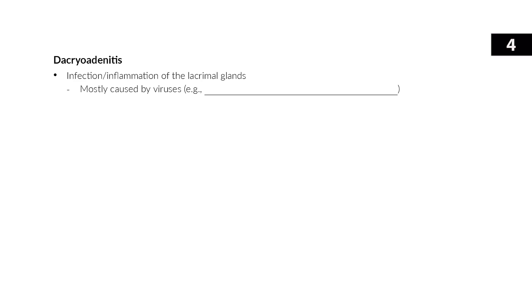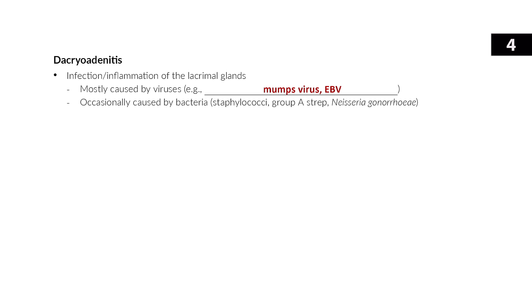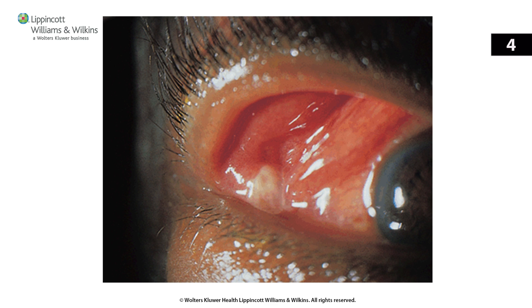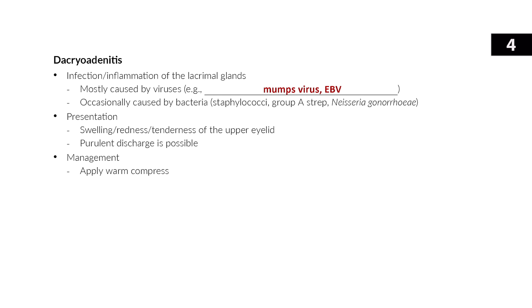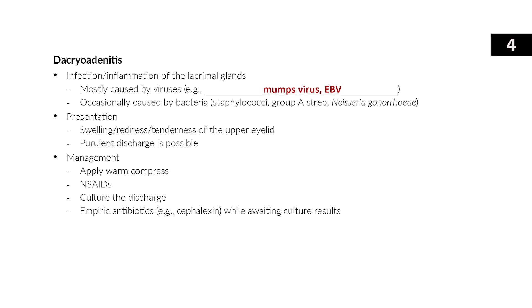Dacryoadenitis is infection and inflammation of the lacrimal glands — the tear glands. It's often caused by viruses like mumps or EBV, but bacteria like staph, group A strep, and Neisseria gonorrhea can cause it too. The lacrimal glands are near the upper outer portion of each eye, so dacryoadenitis causes swelling, redness, and tenderness along the upper eyelid and sometimes purulent discharge. Treat with warm compresses, NSAIDs, and systemic antibiotics like cephalexin if bacterial infection is suspected.